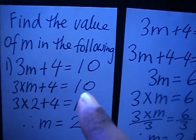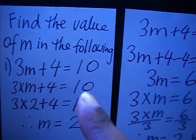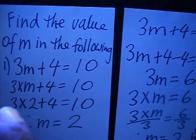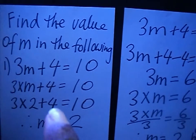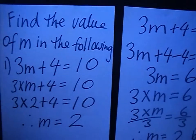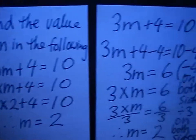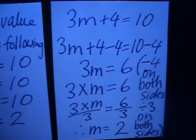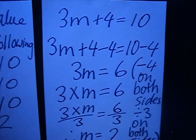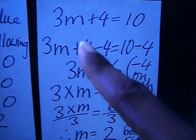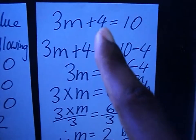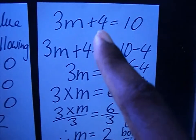Of course you can guess, but sometimes that poses to be very difficult. The answer is 2 — so 2 times 3 is 6, and 6 plus 4 is 10, so m is equals to 2. The better algebraic way of doing it is as follows: 3m plus 4 is equals to 10, and you have an addition sign.